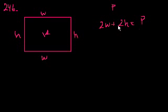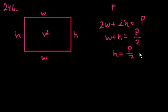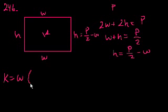If you divide both sides of this by 2, you get width plus height equals perimeter over 2. And then you get height equals perimeter over 2 minus width. So this equals perimeter over 2 minus width. And so the area, k, will equal the width times the height.